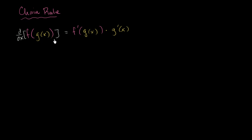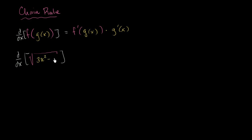Now this might seem all very abstract and mathy. Let's try it with a real example. Let's say we were trying to take the derivative of the square root of 3x squared minus x. So how could we define an f and a g so that this really is the composition of f of x and g of x?